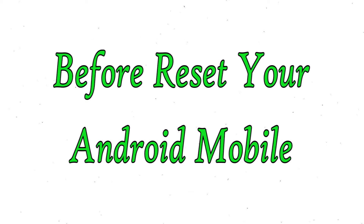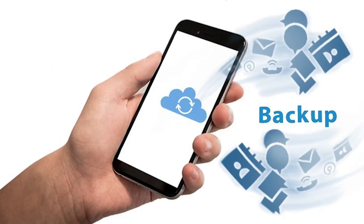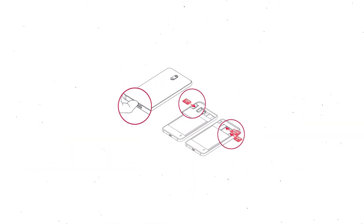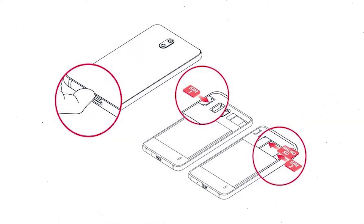Before resetting your mobile, charge your mobile if the battery is less than 50%. You need to make sure that the data on your device is backed up so you do not lose valuable photos or documents. Reset deletes all your mobile data, so you should back up all important data and remove SIM and SD card.